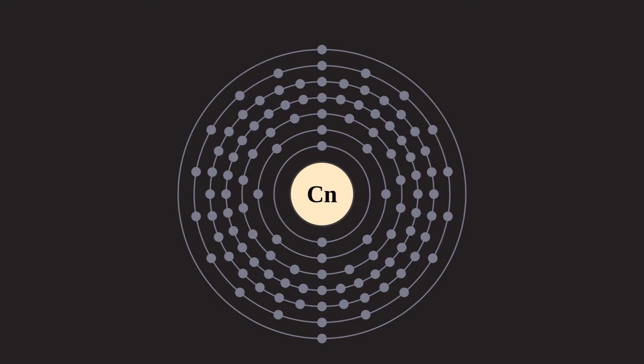Copernicium is a synthetic chemical element with symbol Cn and atomic number 112. It is an extremely radioactive element and can only be created in a laboratory.